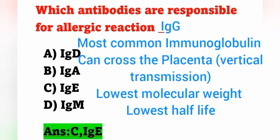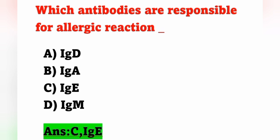IgG is the most common immunoglobulin. IgG can cross the placenta — vertical transmission occurs via IgG. IgG also has the lowest molecular weight among immunoglobulins and the lowest half-life.